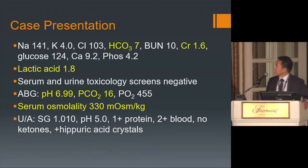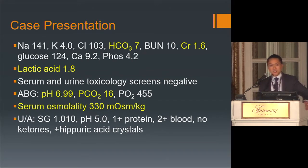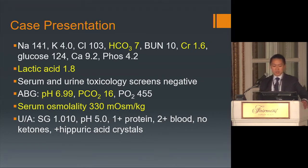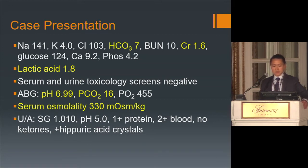His labs, however, were not unremarkable. He had a very severe metabolic acidosis with a bicarbonate of 7. His creatinine was elevated to 1.6, reportedly normal about a month prior. His lactic acid level was 1.8. Serum and urine toxicology screens were negative. His ABG showed a pH of 6.9 with a PCO2 of 16. He had a serum osmolality of 330 (measured). His UA showed a little bit of protein, some blood, and what were reported as some hippuric acid crystals.